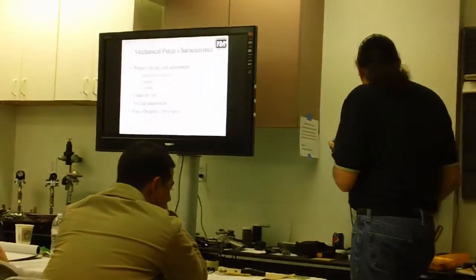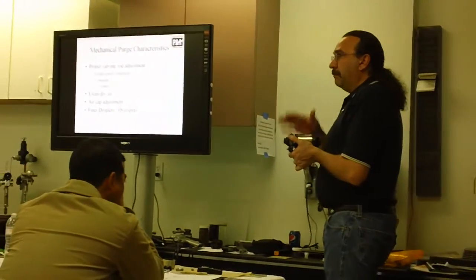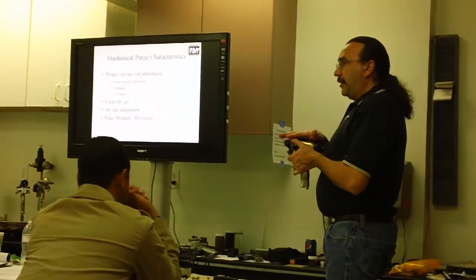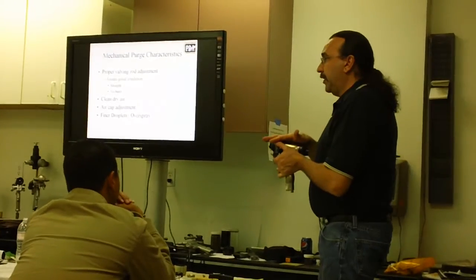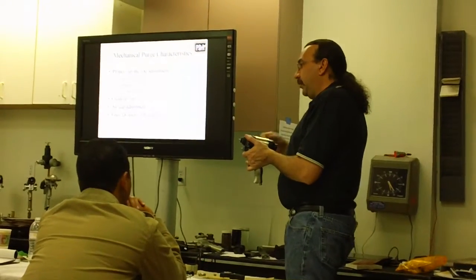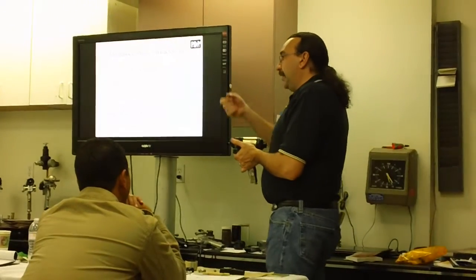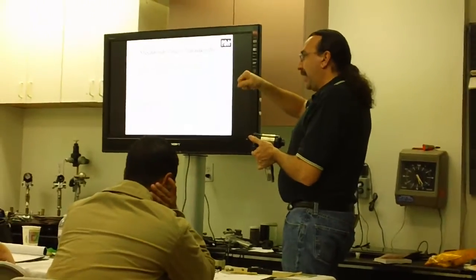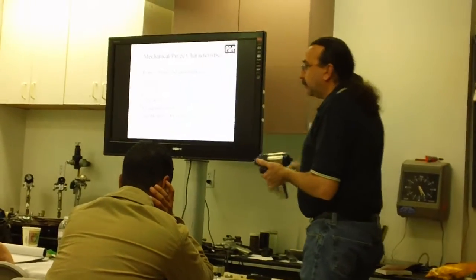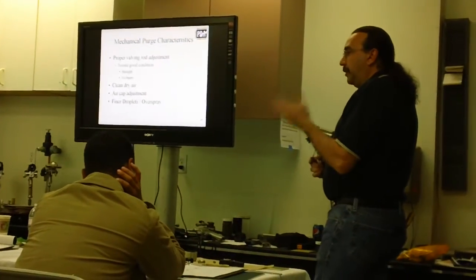That's why inside of the book that comes with the gun, it's labeled out how to properly adjust the valving rod. Tighten it up until you've made contact with the back side of the PCD, and then back the pressure off about an eighth turn. The valving rod is set. You're ready to go spray.